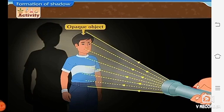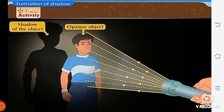As a result, the light does not reach a wall or any other surface on the other side of the object. That part remains dark. This dark part is called the shadow of the object.